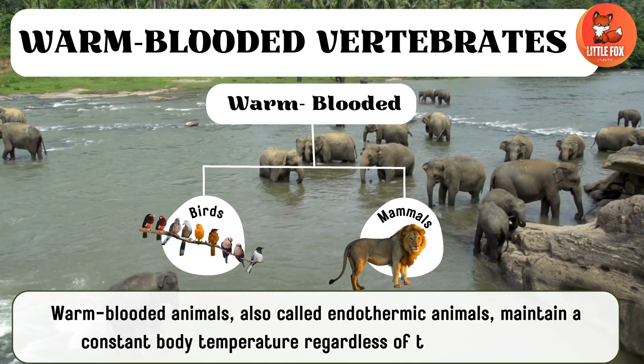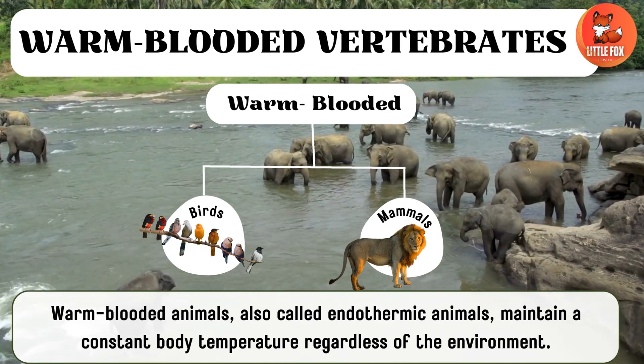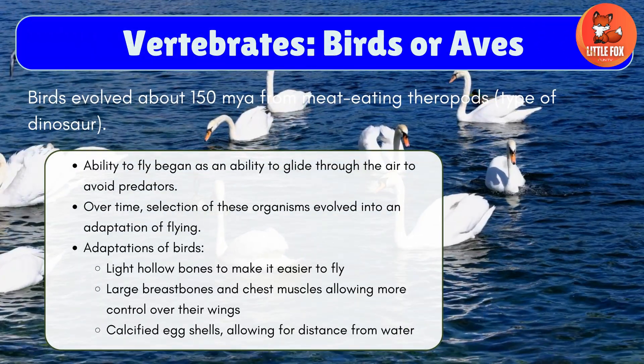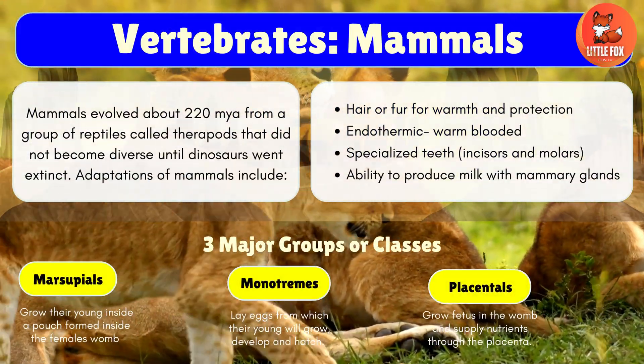Warm-blooded animals are further classified into birds and mammals.